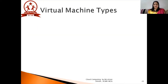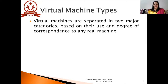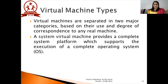So let's proceed further to the topic, which is virtual machine types. Virtual machines are separated into two major categories based on their use and degree of correspondence to any real machine. The first type is called SVM, or system virtual machine, which provides a complete system platform that supports the execution of a complete operating system.